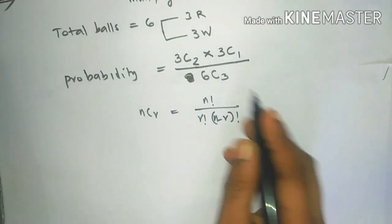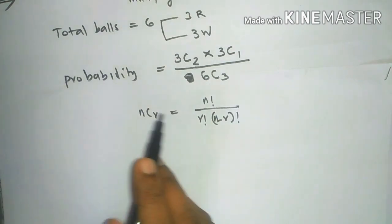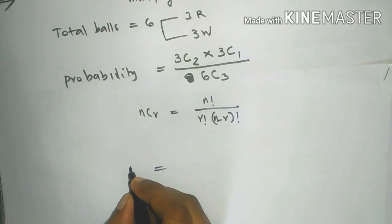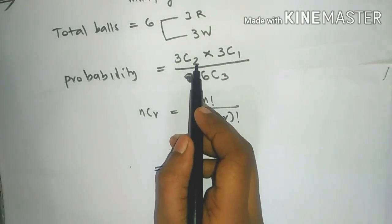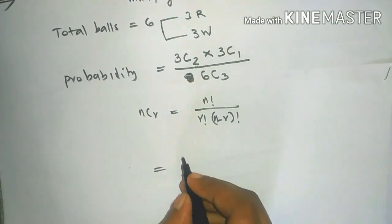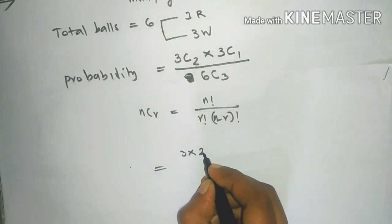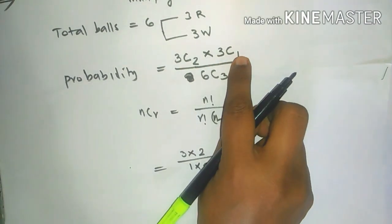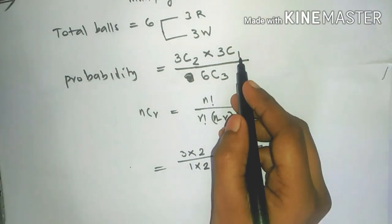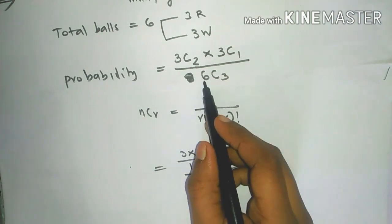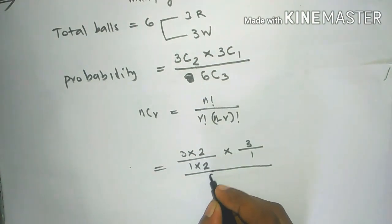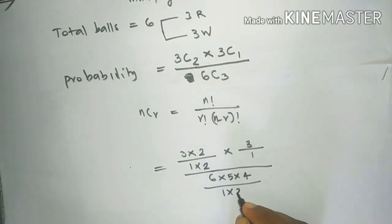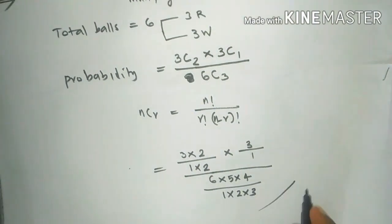NCR is equal to n factorial divided by r factorial into n minus r factorial. So 3 into 2 divided by 2, then 2 into 3 into 2. Then 6 into 5 into 4 divided by 1 into 2 into 3.